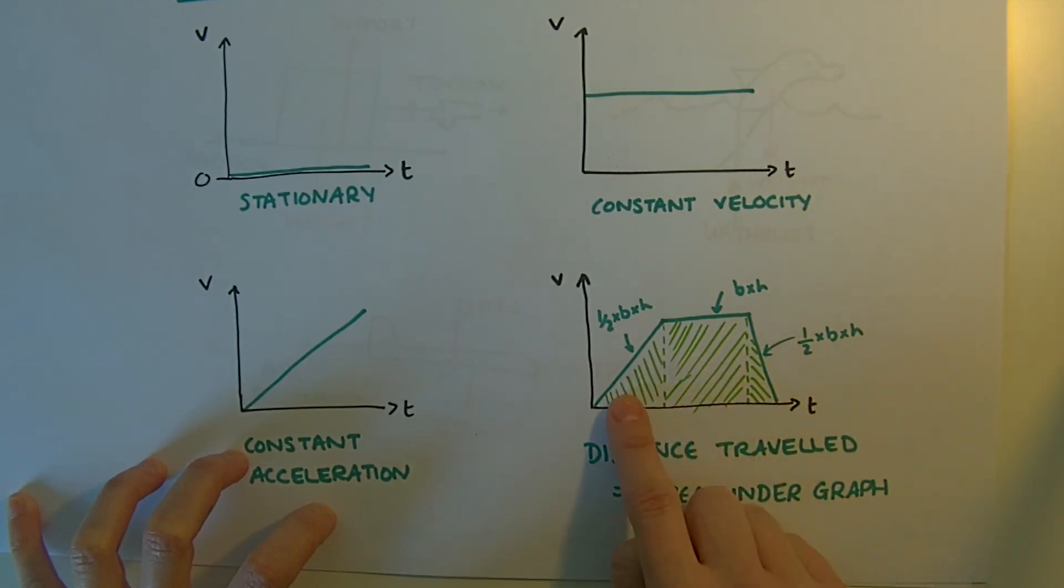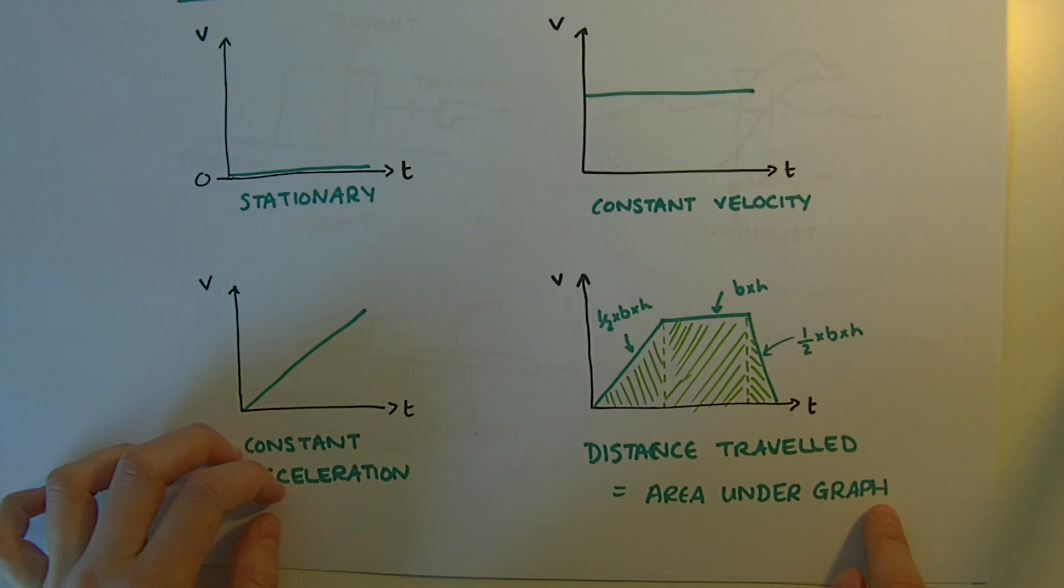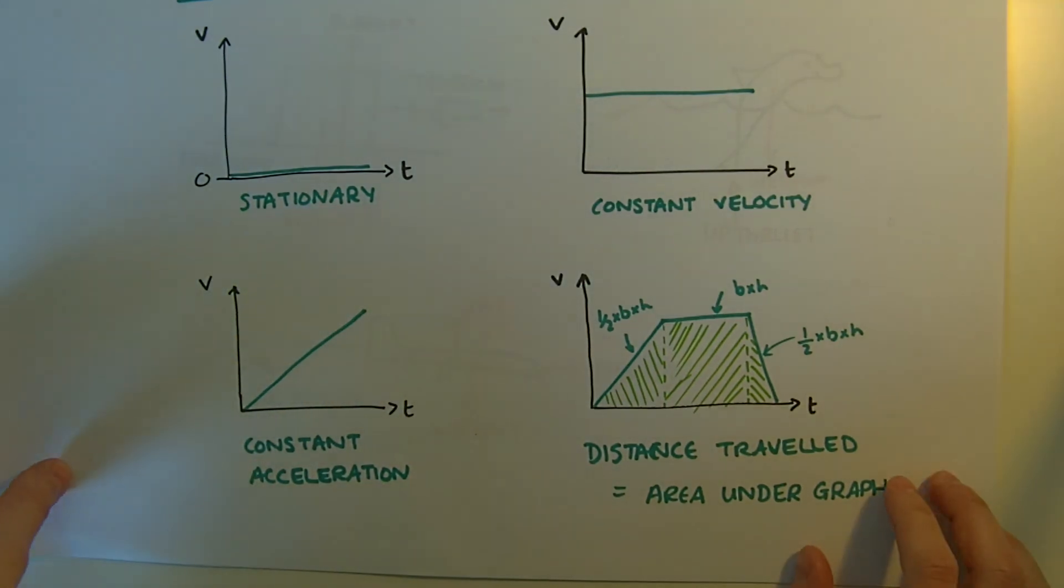So you split it up into sections, triangles, squares or rectangles, and knowing that a triangle is a half times base times height, rectangle is base times height. Work out the area under the graph to find the distance travelled.